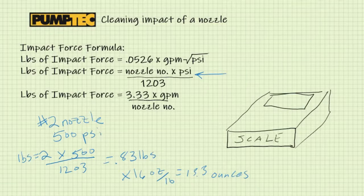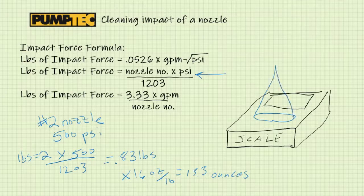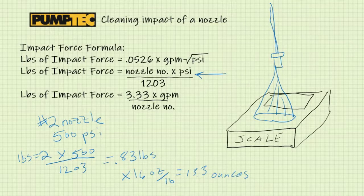Let's say you had a scale, a kitchen scale where it reads in ounces. And let's say you sprayed this number two nozzle at 500 psi onto the surface. Let's say you sprayed it onto the scale. The scale would read 13.3 ounces.